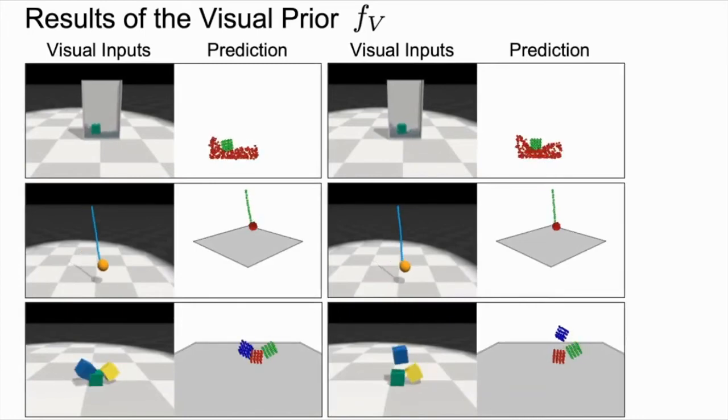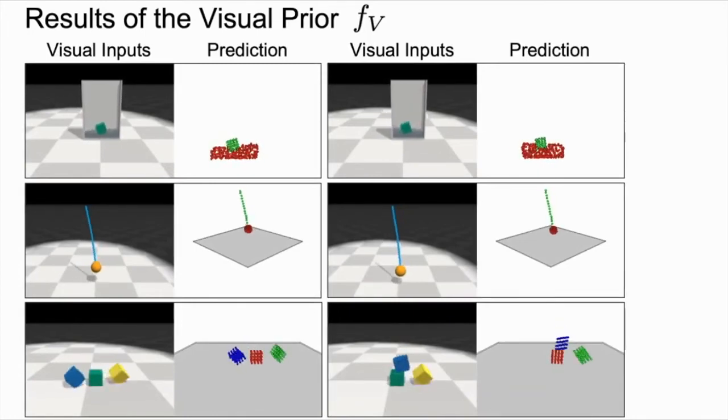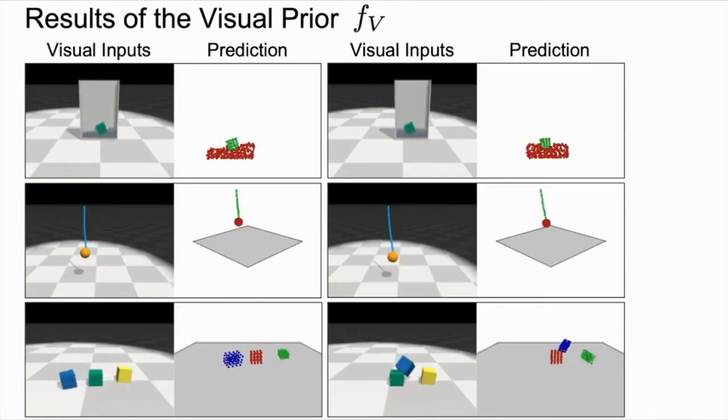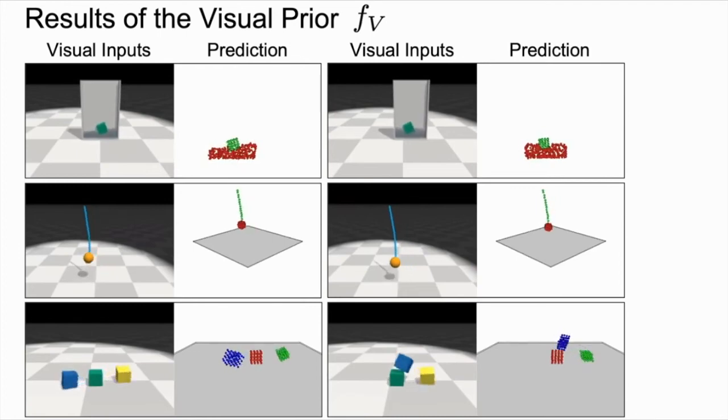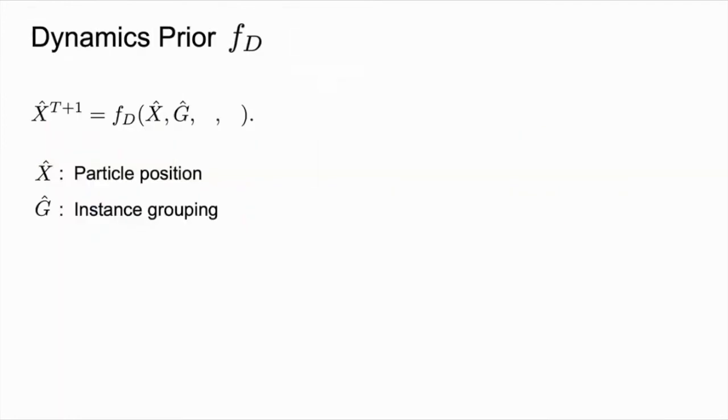Here we show some qualitative results of our visual prior in environments involving interactions between fluids and rigid objects, a bulb hanging on a rope, and rigid cubes falling down and colliding with each other. As for the dynamics prior, the positions of the particles X define a point cloud that indicates the spatial span of the objects in the environment. The particles form groups G to represent different object instances. Each particle has a binary rigidity label Q that indicates whether the object it belongs to is a rigid body.